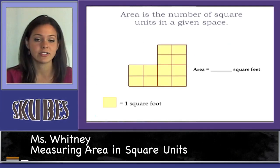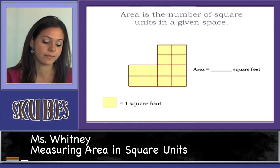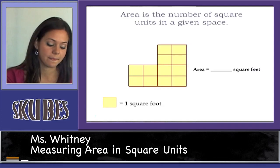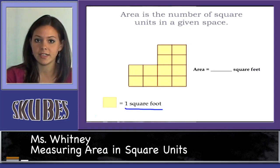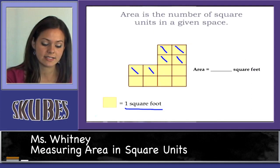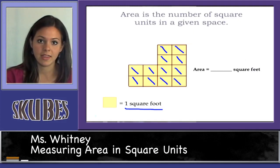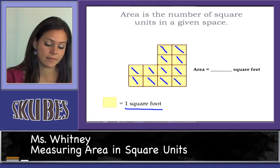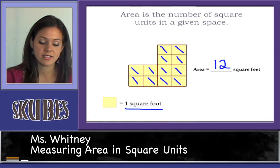We can also find the area of a shape that is not a rectangle. Let's take a look at this shape. We are measuring in square feet. We have 1, 2, 3, 4, 5, 6, 7, 8, 9, 10, 11, 12. The area of this shape is 12 square feet.